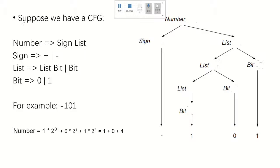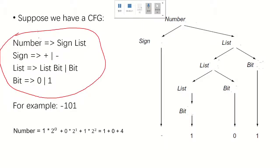Suppose we have a context-free grammar like this: a number goes to sign and list; sign goes to positive sign or negative sign; list goes to list and bit, or just one bit; and bit goes to zero or one.